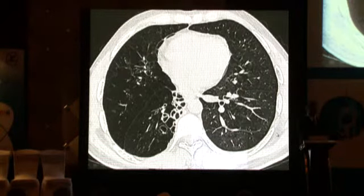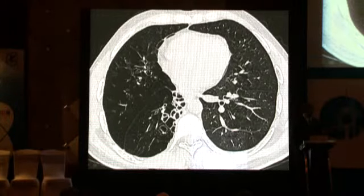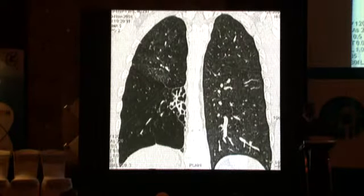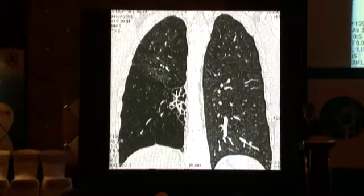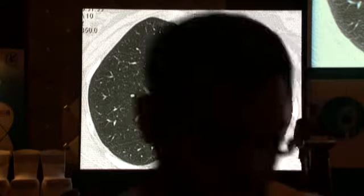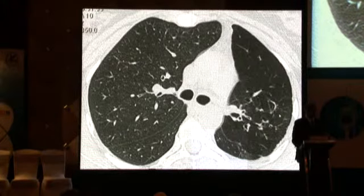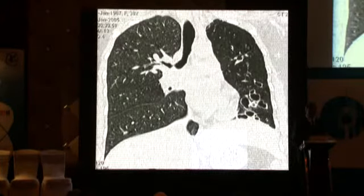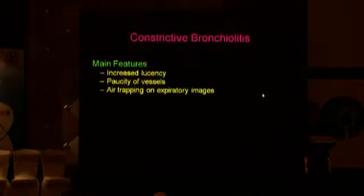On the expiratory image, the normal right lung swings into the thorax and onto the left side to occupy the remaining volume — this is MacLeod's or Swire-James syndrome. These were conditions with constrictive bronchiolitis without bronchiectasis, but bronchiectasis can occur within these segments as well. Here we see upper and lower lobe bronchiectasis visible in the coronal images, showing middle and lower lobe involvement very well.